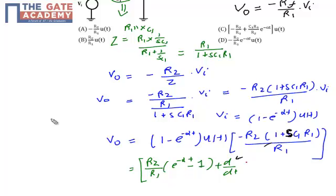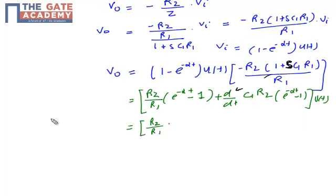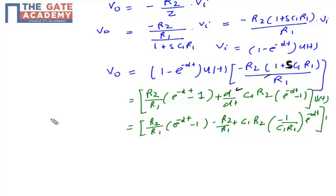With S replaced by d/dt, our expression includes a term (d/dt) · C1R2 · (e^(−αt) − 1) · u(t). Further simplification gives (R2/R1) · (e^(−αt) − 1) minus (R2/R1) plus C1R2 · (−1/(C1R1)) · e^(−αt) · u(t).